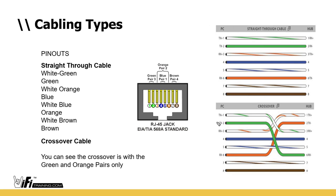With a crossover cable you cross one end so the transmit and receive are swapped: one end is RX/TX, the other is TX/RX - that way two hosts can talk to and receive from each other. We use crossover cables sometimes but most of the time it's straight-through cables. As far as color coding, if you're making cables you can just make sure the same colors are on both ends and it'll work as a straight-through cable.